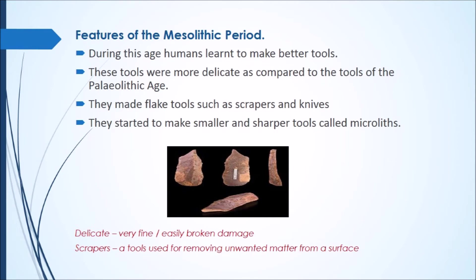During the Mesolithic period, humans learned to make better tools. These tools were more delicate compared to the tools of the Paleolithic age — even though better, they were not as strong. They made flake tools such as scrapers and knives. Flake tools are very thin and flat tools. A scraper is a tool used for removing unwanted matter from a surface.